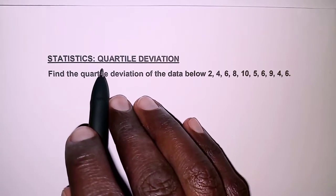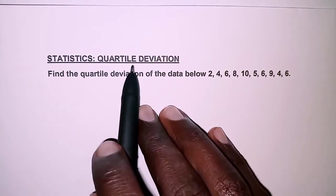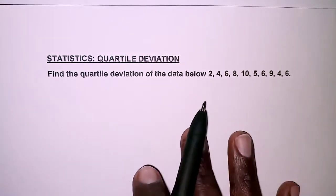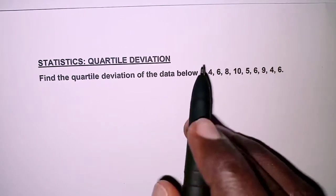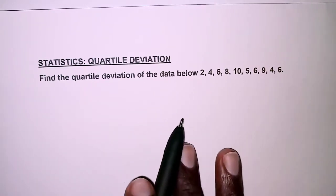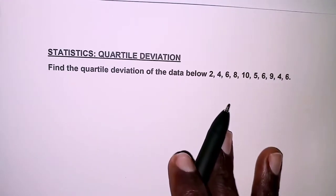The question today is on statistics, and we are going to determine the quartile deviation of a given data. We have the data as shown. Find the quartile deviation of the data below.